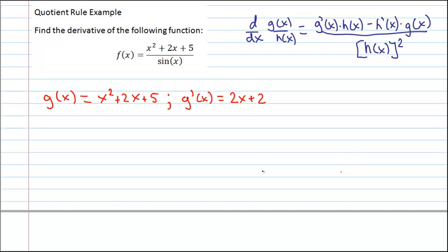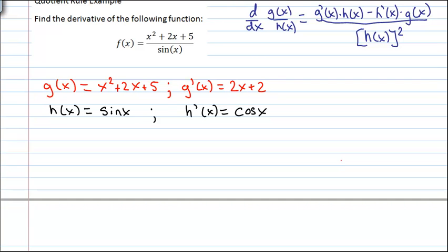Now, I will do h of x and h prime of x in black. h of x equals sine x, and h prime of x equals cos x. Okay, now let's use this rule to find what f prime of x here is.